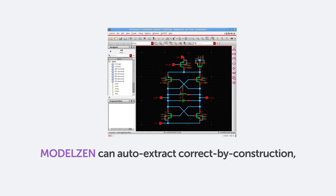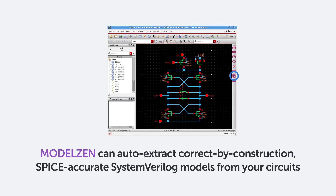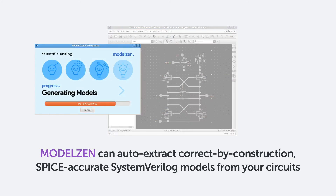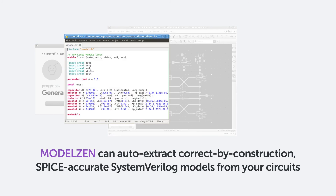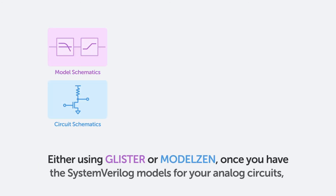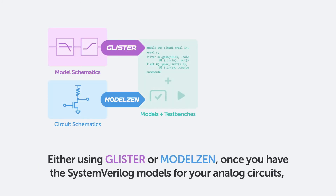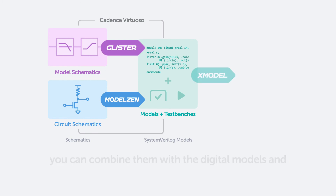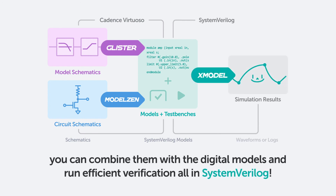On the other hand, bottom-up modeling requires extracting models that behave the same way as the implemented circuits, so you can run extensive sign-off verification before chip fabrication. Model Xen can auto-extract correct-by-construction, SPICE-accurate SystemVerilog models from your circuits. Either using Glister or Model Xen, once you have the SystemVerilog models for your analog circuits, you can combine them with the digital models and run efficient verification all in SystemVerilog.